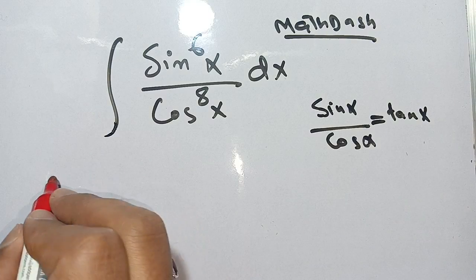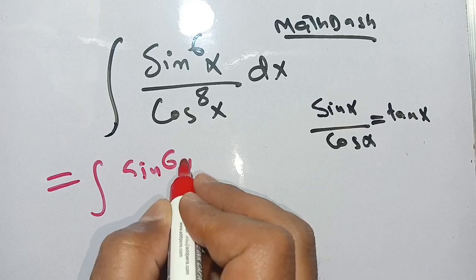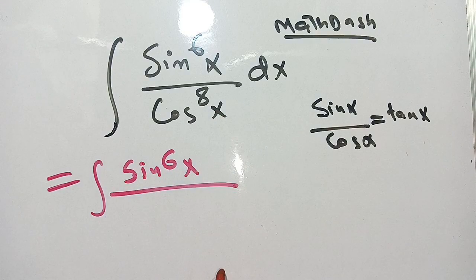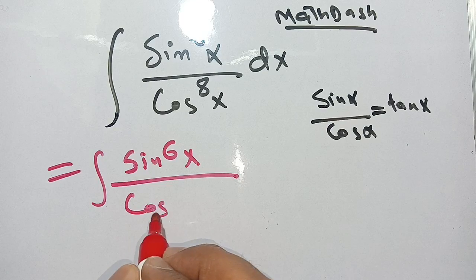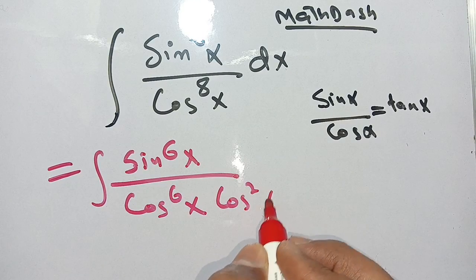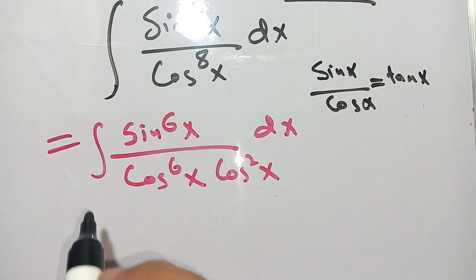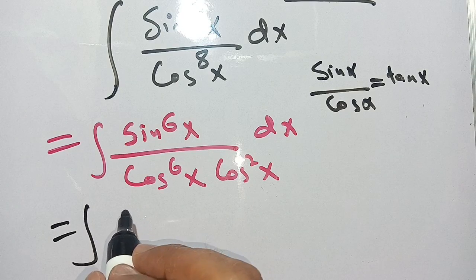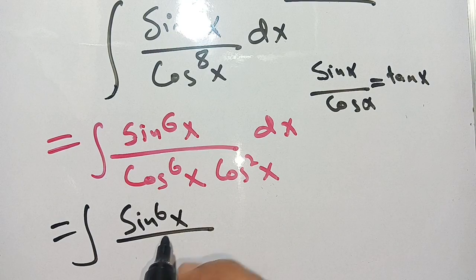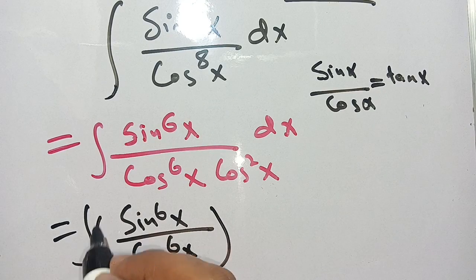We have the integration of sin⁶(x) divided by cos⁸(x), which can be broken down as sin⁶(x) divided by cos⁶(x) times cos²(x) dx.